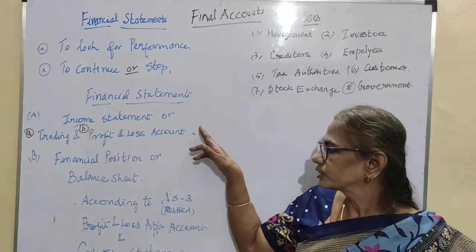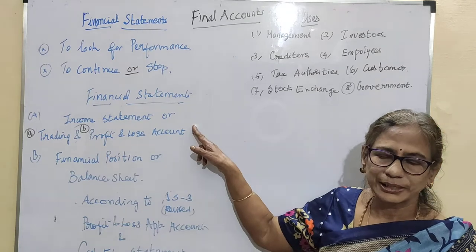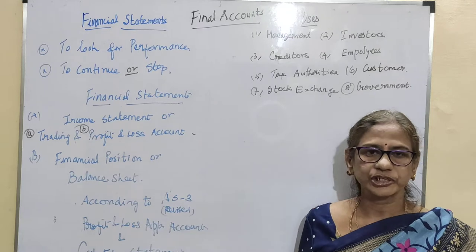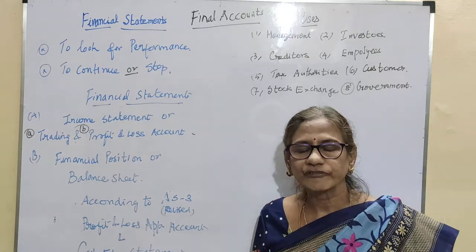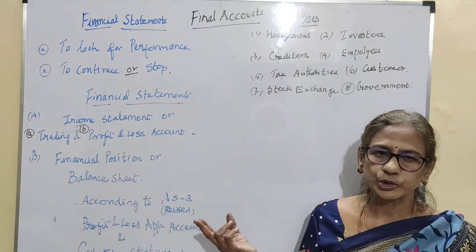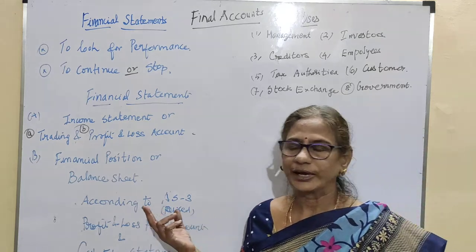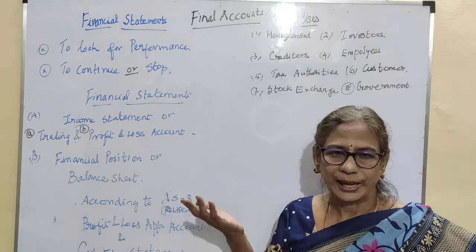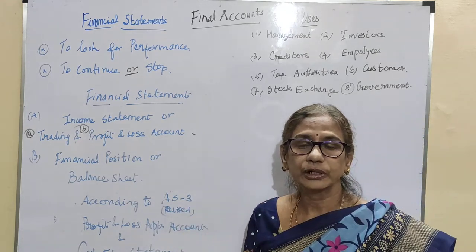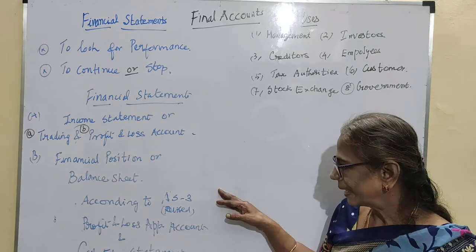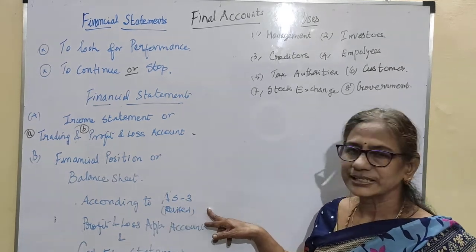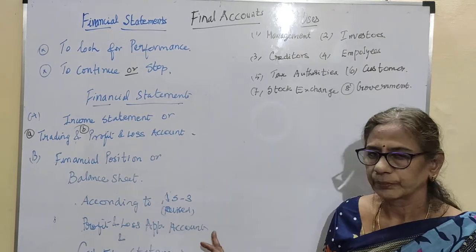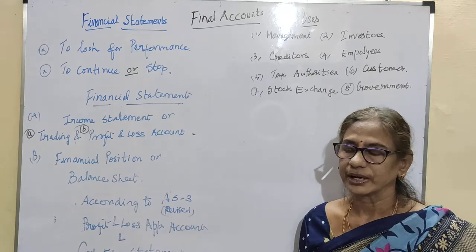To summarize, the financial statements include: the income statement, which is the trading and profit and loss account for manufacturing businesses, and only profit and loss account for service-oriented and trading businesses; the financial position statement, which is the balance sheet where asset balances should tally with liability balances; and according to the latest accounting standards, the profit and loss appropriation account and cash flow statement are also mandatory.